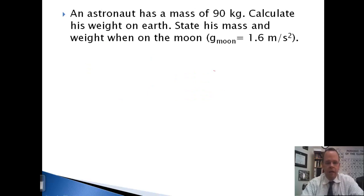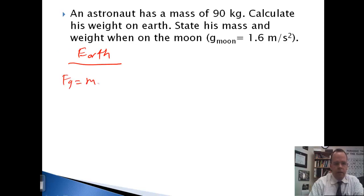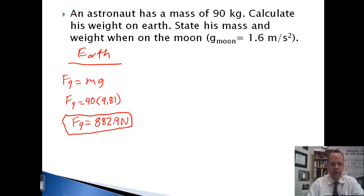An astronaut has a mass of 90 kilograms. Calculate his weight on Earth. State his mass and weight on the Moon. So on the Earth, F of G equals MG. So F of G equals 90 times 9.81. His weight on the Earth is 882.9 newtons.